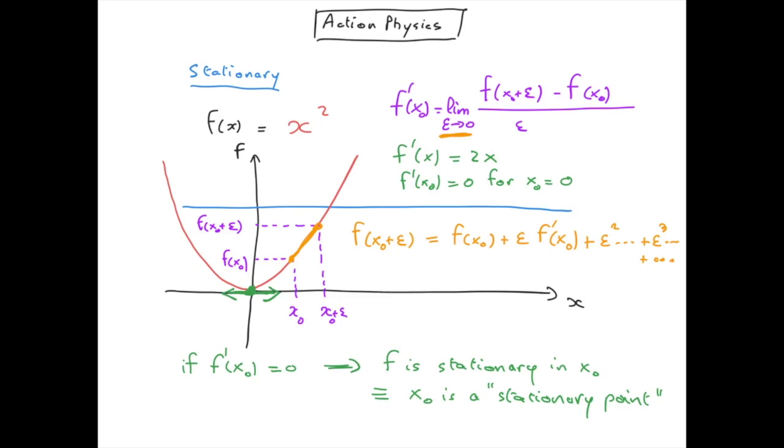But because all these terms are naturally dominated by epsilon squared for small epsilon, because epsilon 3 will be even smaller than epsilon squared, epsilon 4 will be even smaller than epsilon 3, etc.